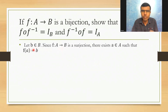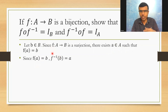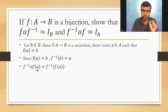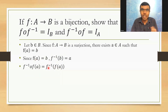I'm going to take an element a ∈ A. Since F maps A to B is a surjection, there exists b ∈ B such that F(a) = b. Now, F⁻¹∘F(a) = F⁻¹(F(a)) = F⁻¹(b) = a.